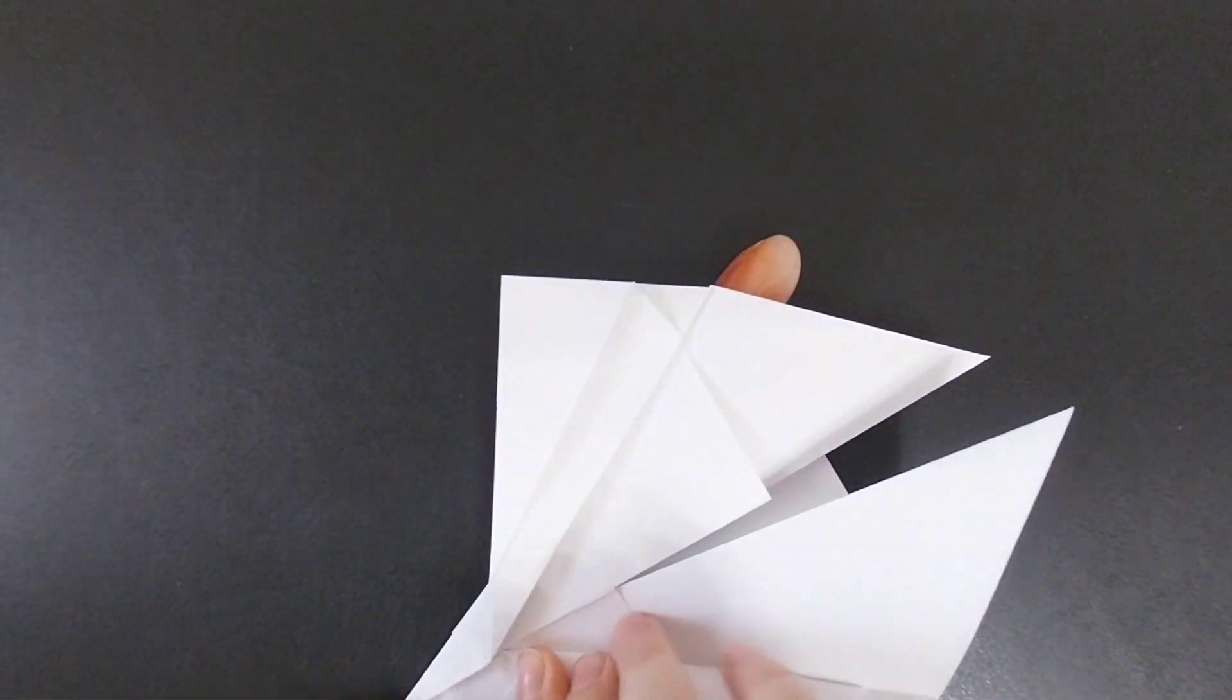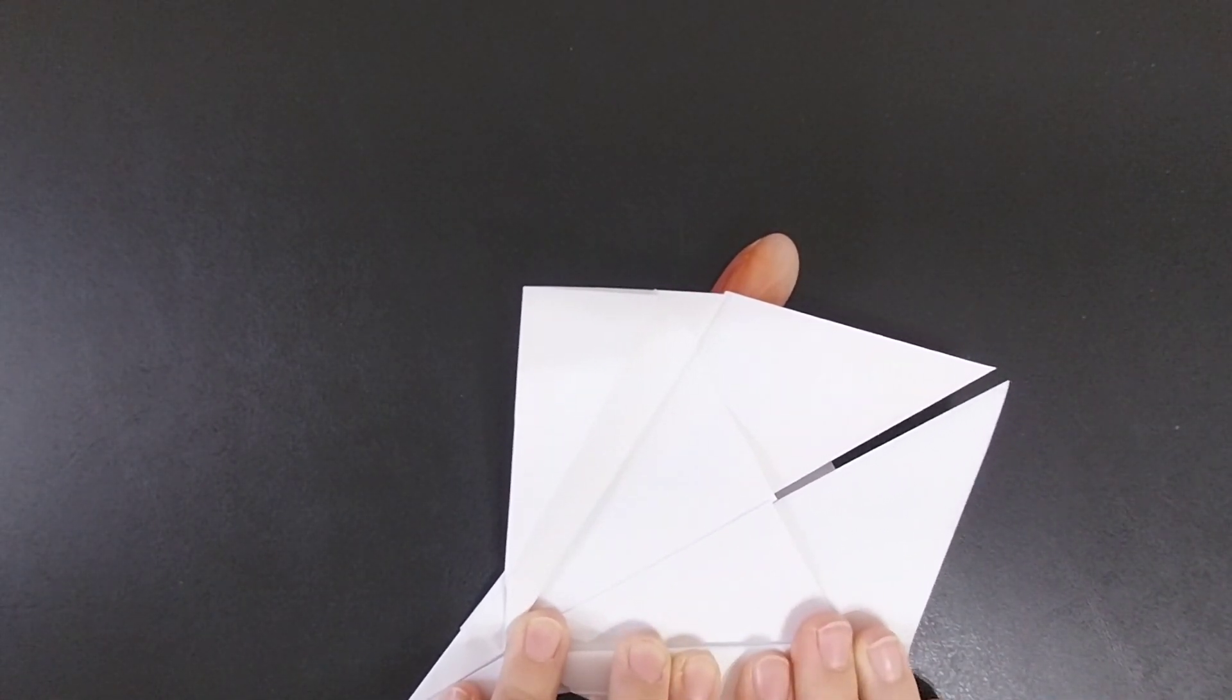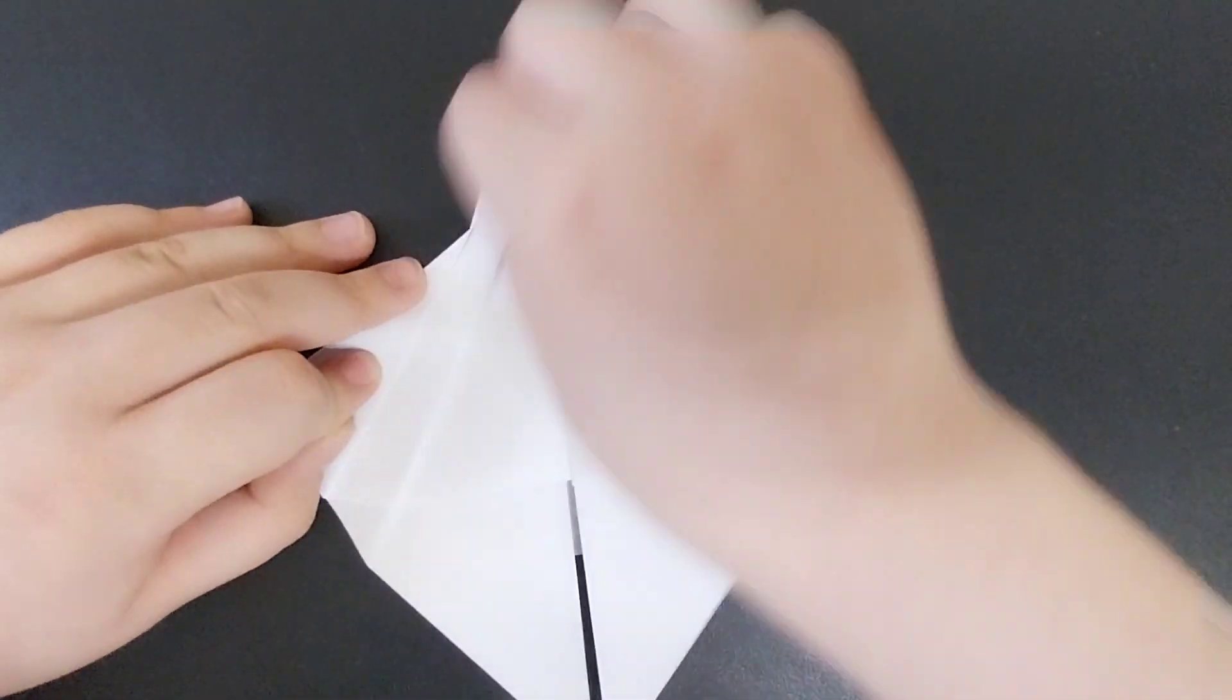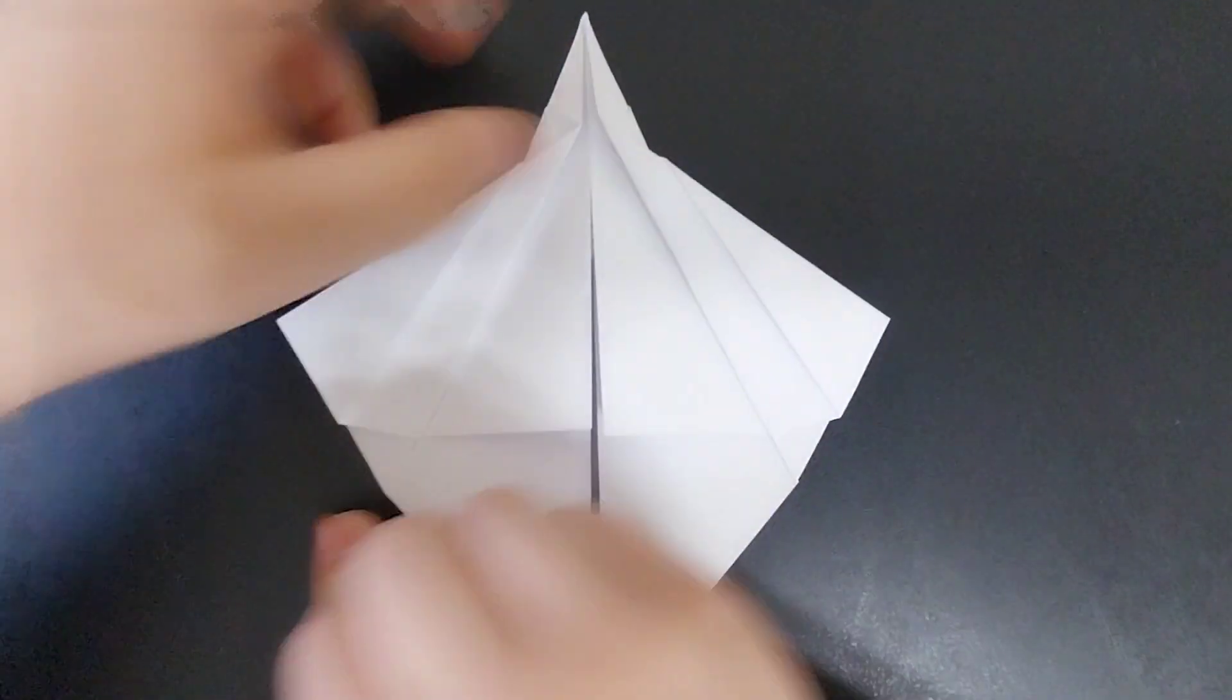Repeat on the other side. Make sure you don't grab the layer underneath while you're folding, so don't fold these two layers along with the wings.